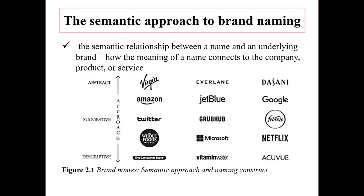The semantic approach is about the semantic relationship between a name and an underlying brand – how the meaning of a name connects to the company, product, or service. As Figure 2.1 demonstrates, the semantic approach can range from descriptive names, which tell it exactly as it is, such as the Container Store or Vitamin Water, to abstract names, which have no relevance, like Virgin, Everlane, or Dasani.